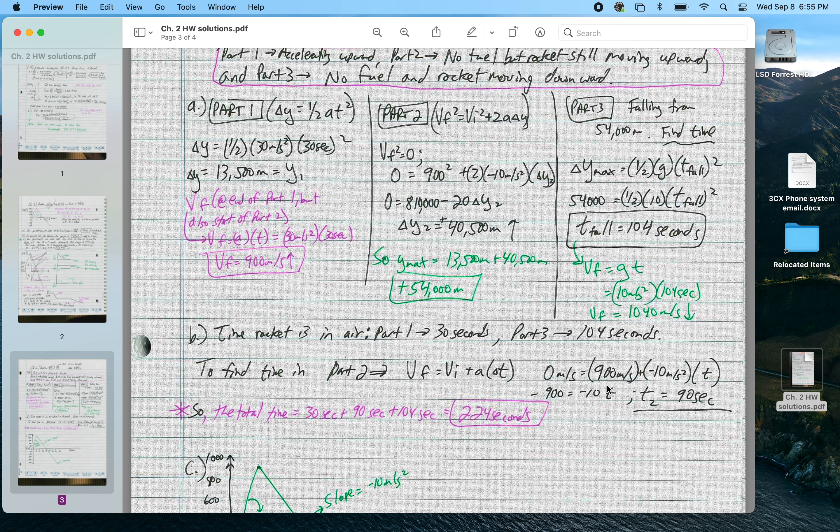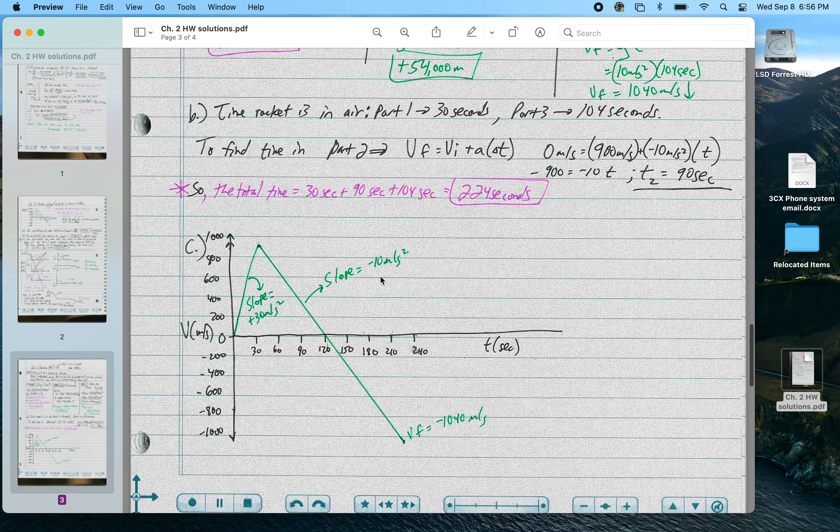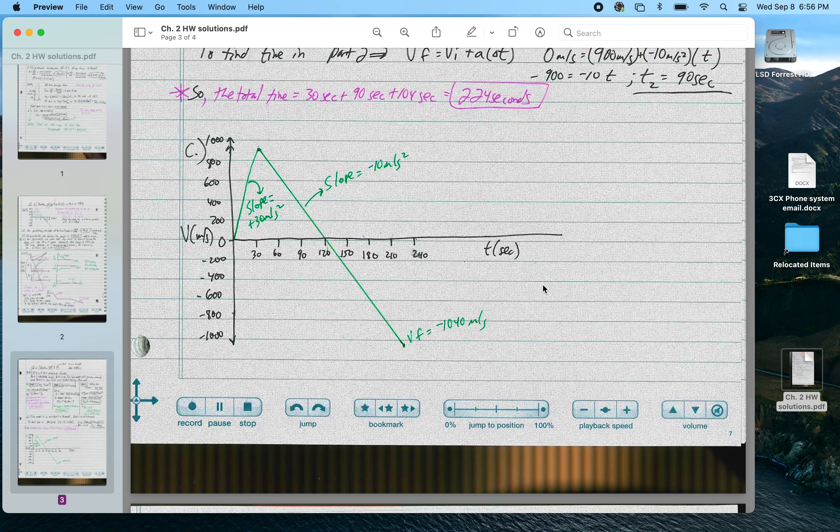So I'm going up at 900 meters per second, acceleration is down at 10 meters per second squared. To have a negative acceleration and end up at 0 meters per second, that's going to take 90 seconds. So the total trip, 30 plus 90 plus 104, is 224 seconds.